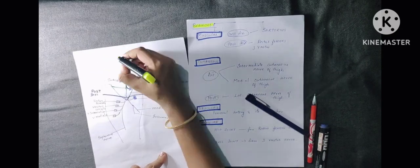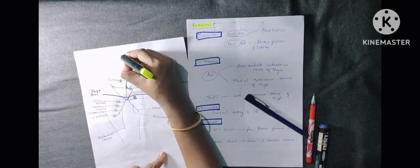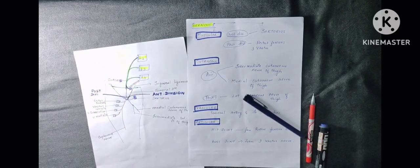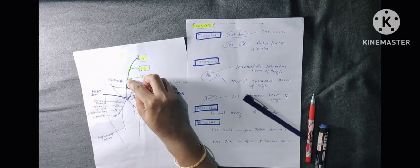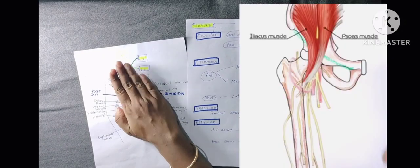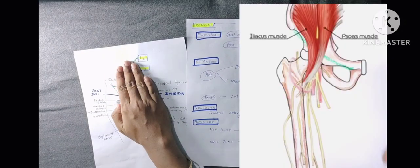This is the femoral nerve as it forms and then passes through the psoas major muscle.